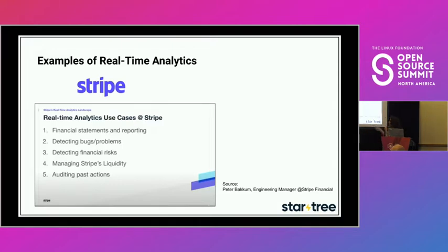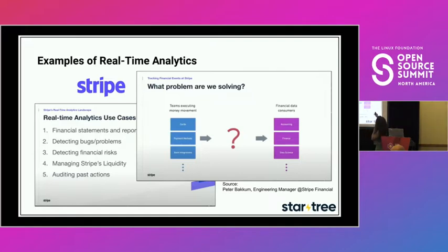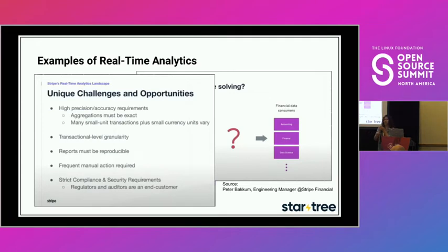Stripe needs to take all that data from multiple engineering teams, consolidate it into one view, and make it accessible in real time to their accounting team, finance team, fraud detection, data science, and more — with literally sub-second querying. This is quite complex, especially considering they're a financial data company with a lot of sensitivity around what data has flowed through the system.